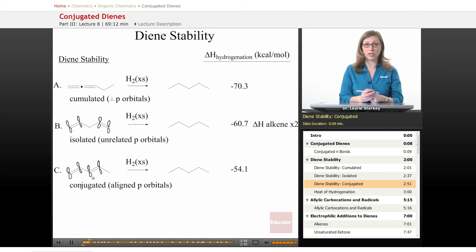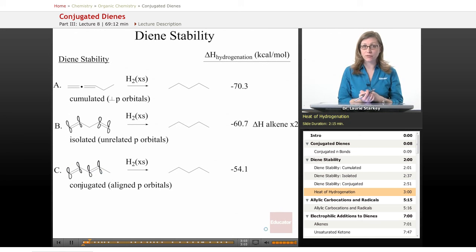And then finally we have the conjugated system where we can have some interaction and delocalization because of resonance. We can take a look at the heats of hydrogenation for each of these dienes to see if we can observe some differences in their energies.